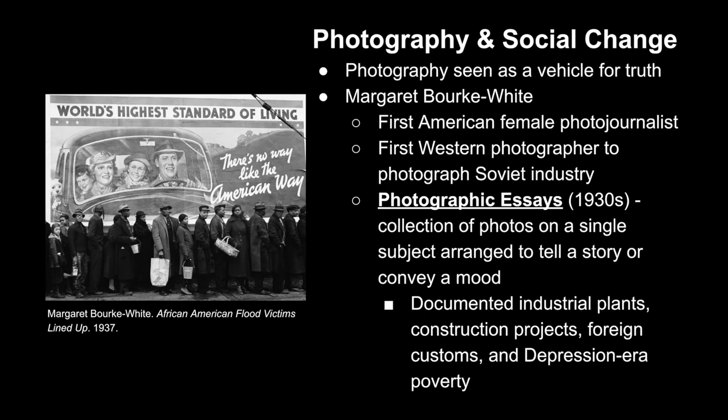Margaret Bourke-White was another artist pursuing social change through photography. She was the first American female photojournalist and the first Western photographer to photograph Soviet industry. In the 1930s, she published photographic essays — a collection of photos on a single subject arranged to tell a narrative or convey a certain mood — documenting industrial plants, construction projects, foreign customs, and Depression-era poverty.